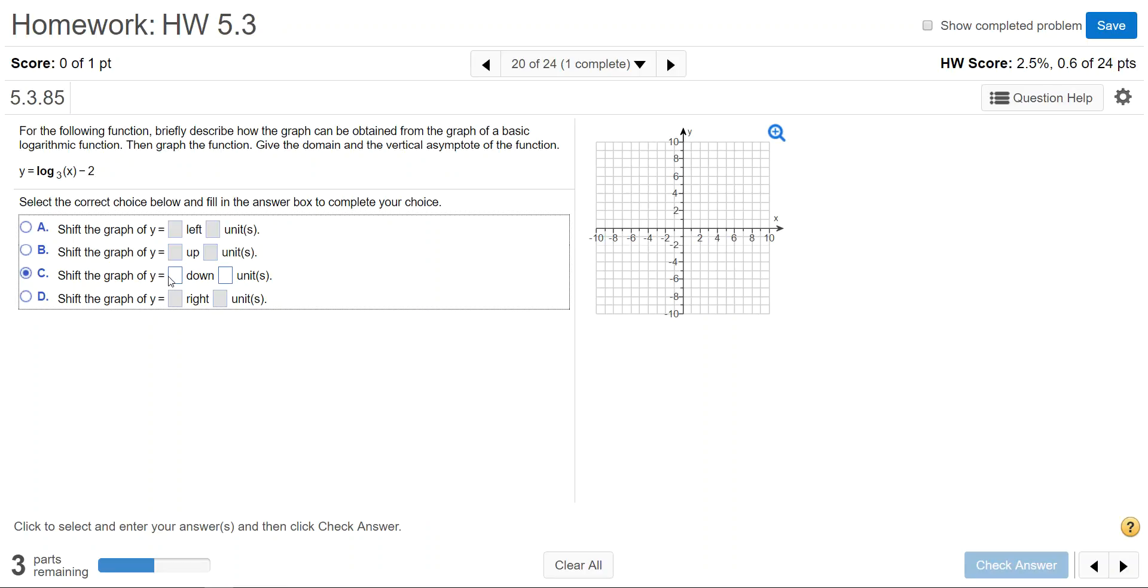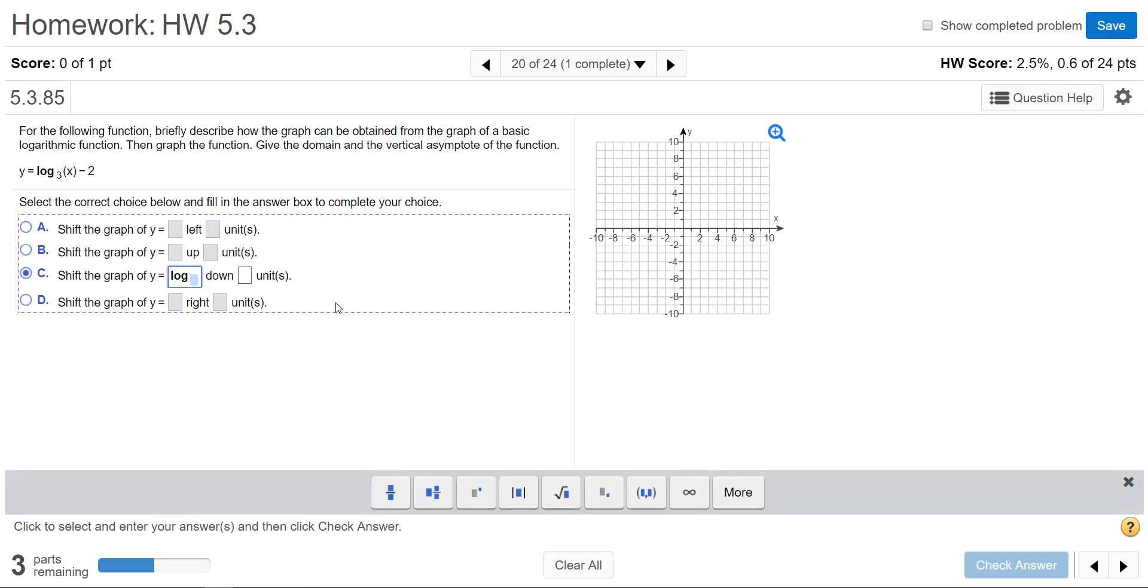It says shift the graph of y equals—I'm going to click in that box and type log for log. Now we want to get the base 3, so select the subscript tool, type your base 3, and then I'm going to arrow to the right to get out of the subscript. Then in parentheses I'm going to type x and close the parentheses.